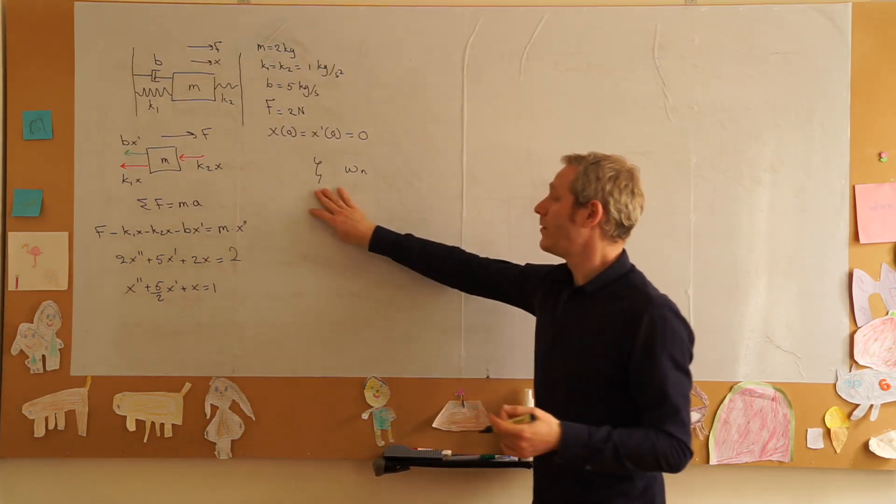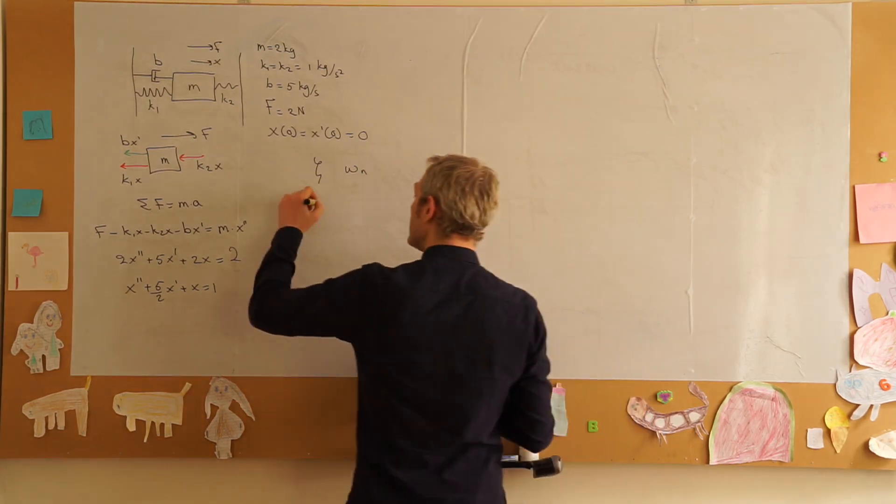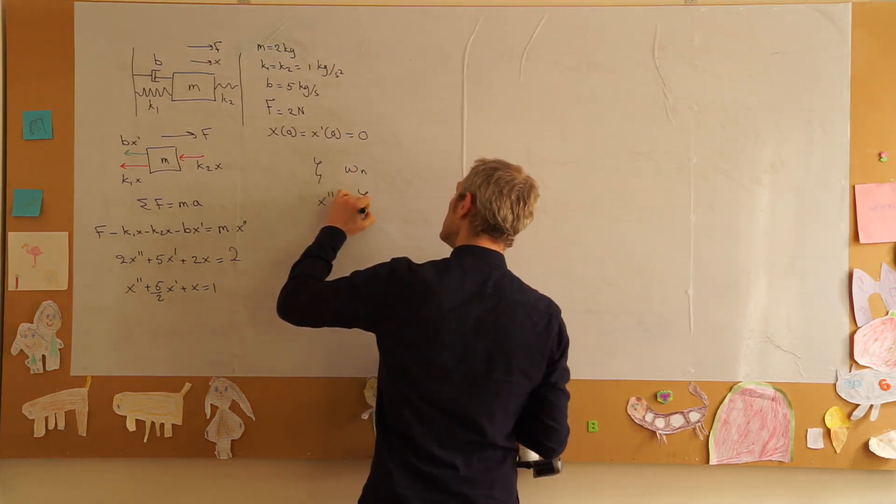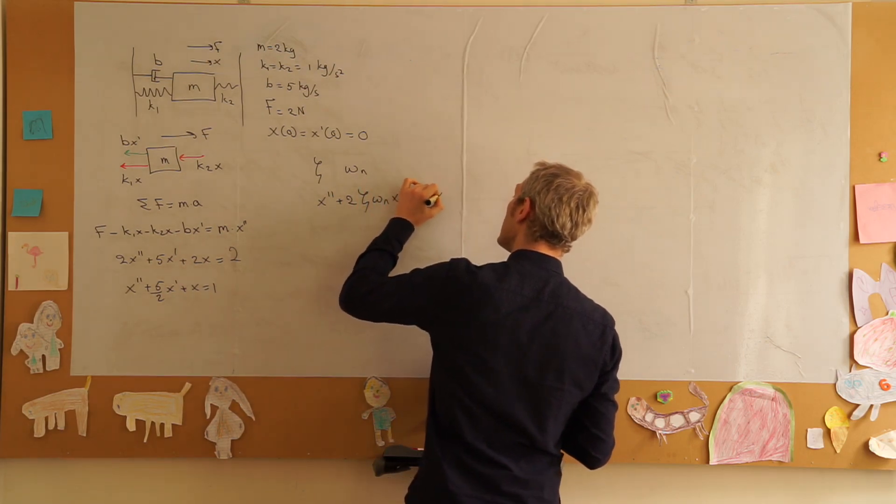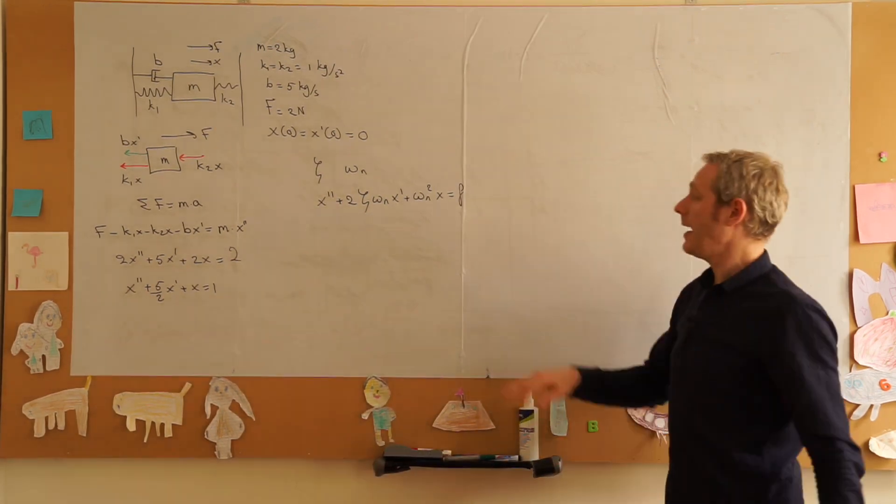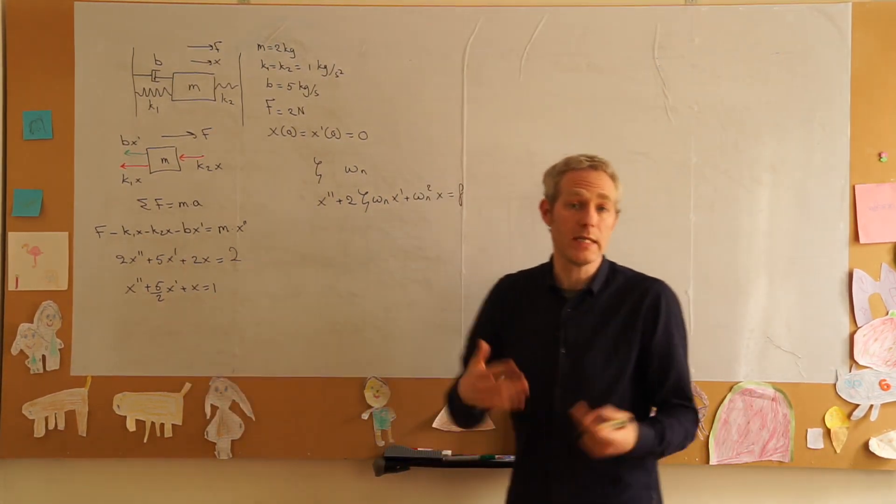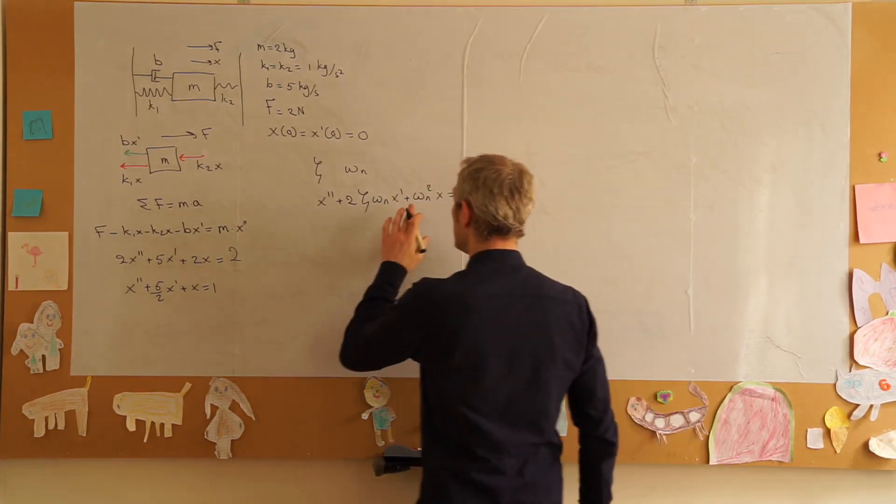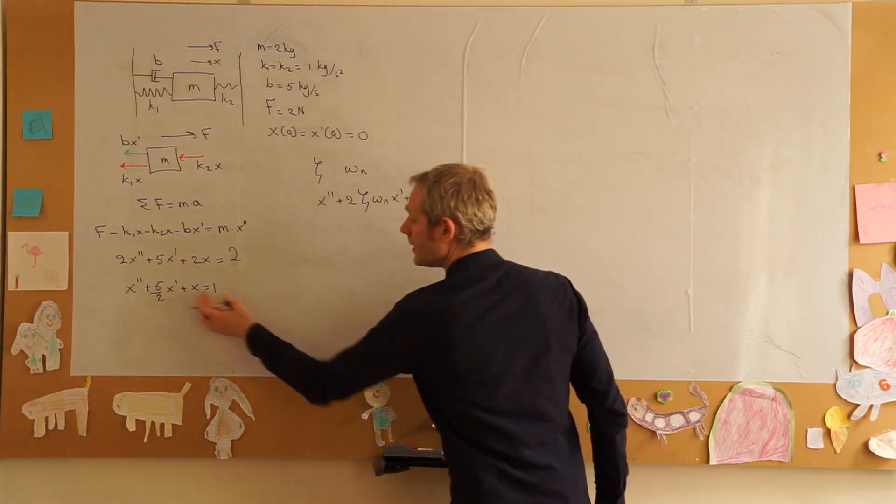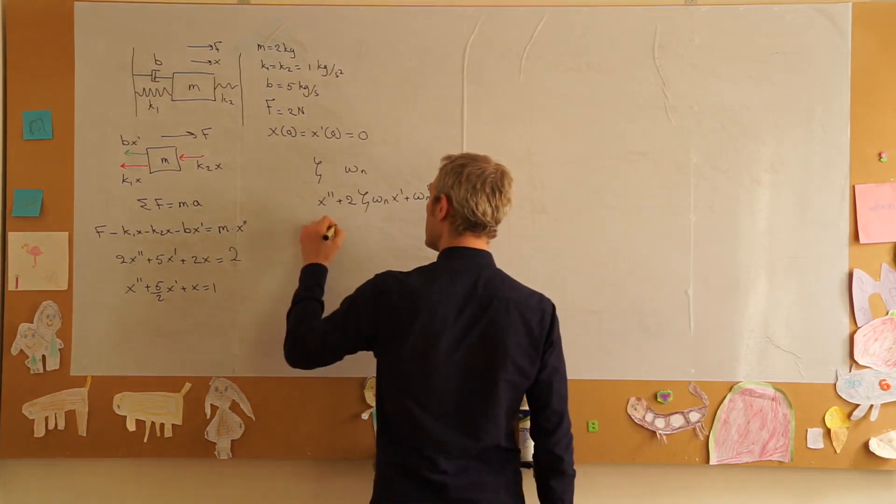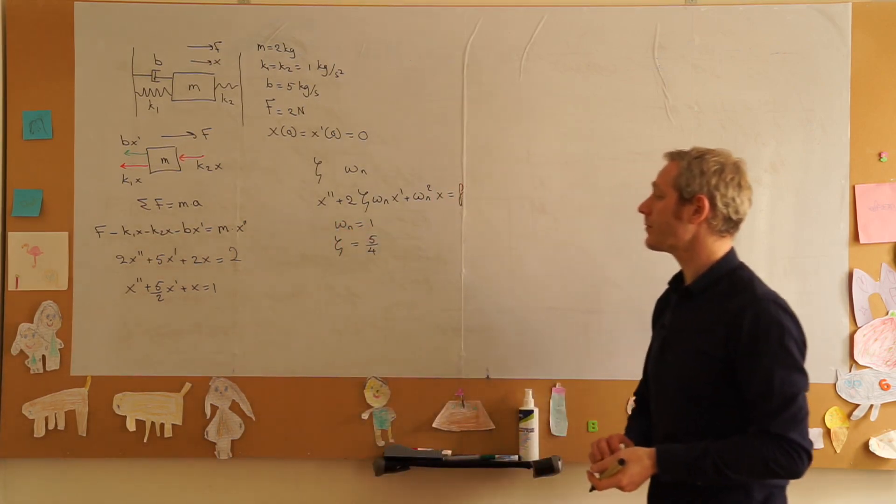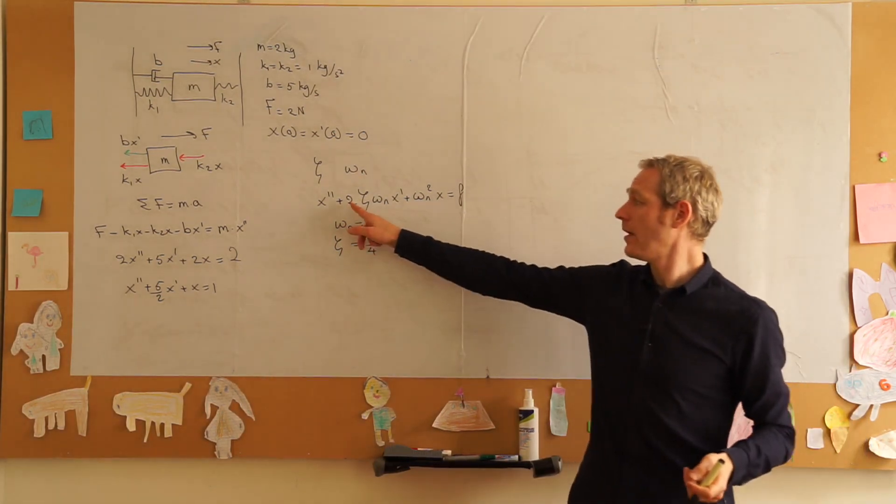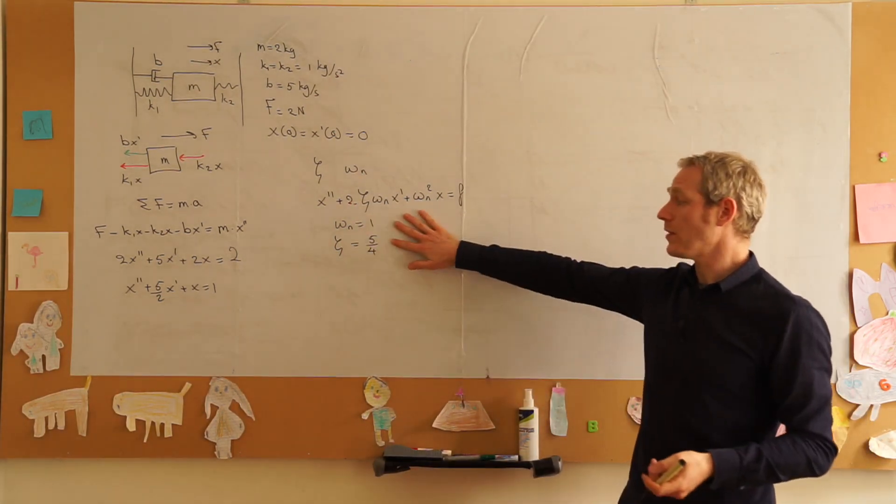We know that if we have a second order system with these two parameters we can write it as x double prime plus 2 zeta omega n x prime plus omega n squared times x equals some input. If we match this form we can easily see that omega n squared has to be equal to 1, so omega n is equal to 1 and we can then see that zeta is equal to 5 over 4.